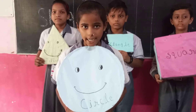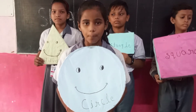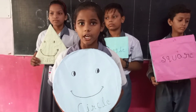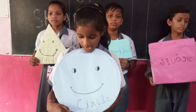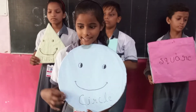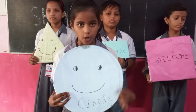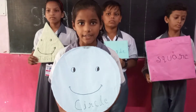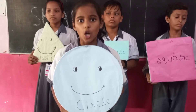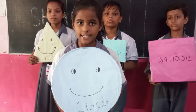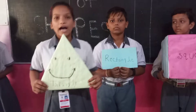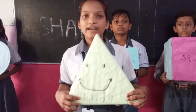I am a circle. A circle is made up of only curves and I have no sides, I have no corners. A real-life example is a clock.